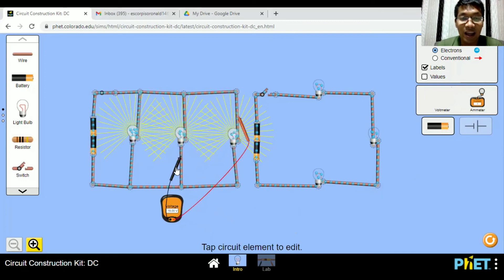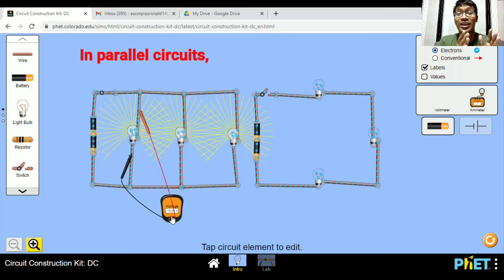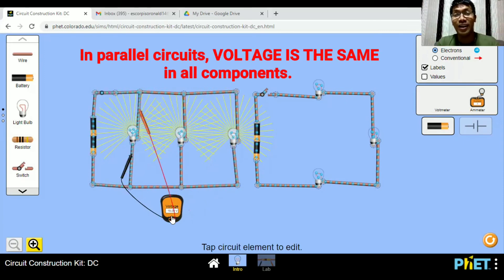Let's try the other bulbs. This one and this one. Oh, it's still 18. First bulb. Still 18. So the voltages are equal or the same in all the components.